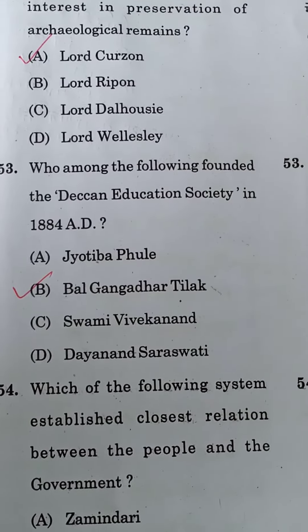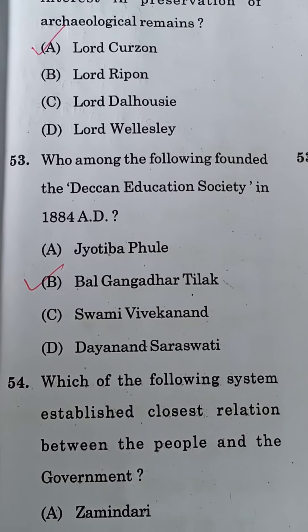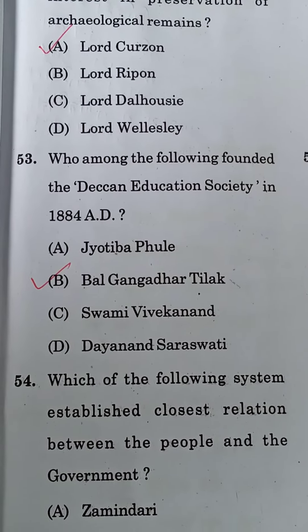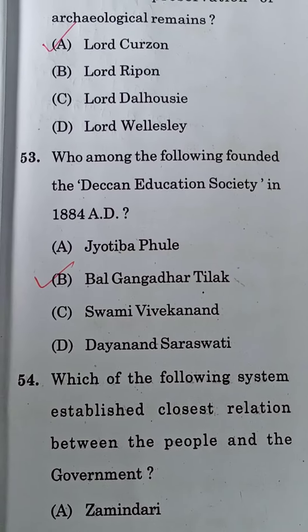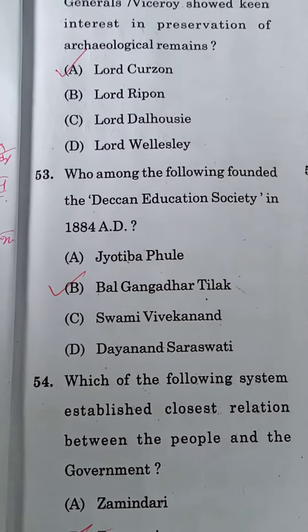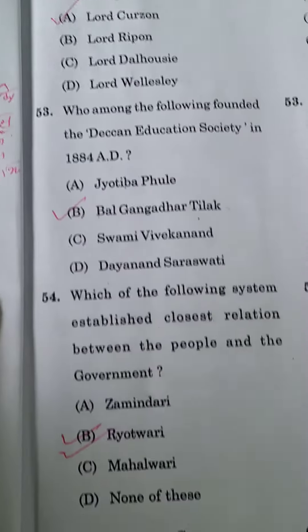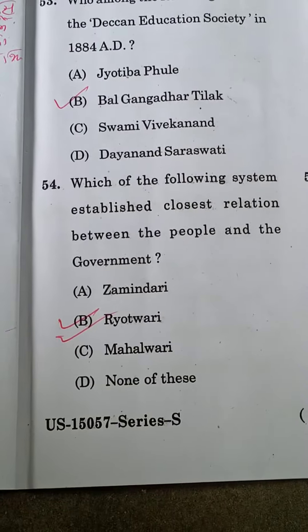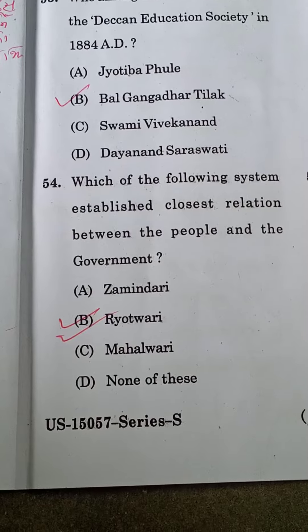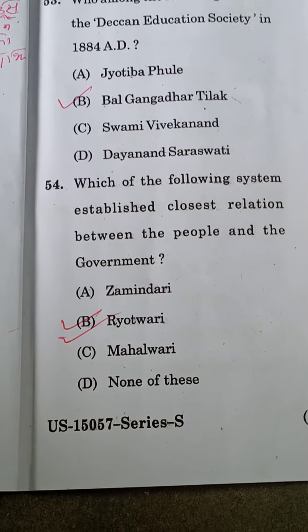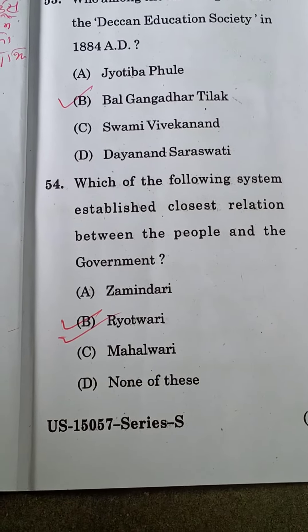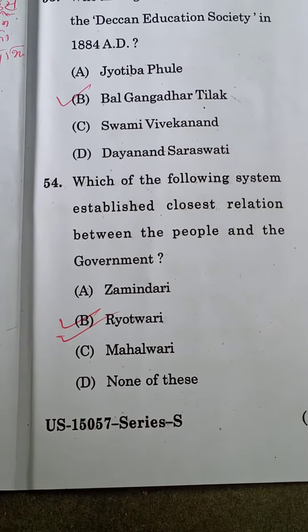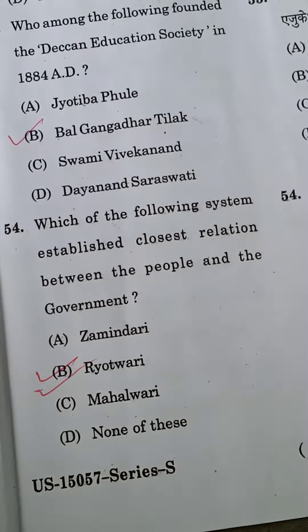Who among the following founded the Deccan Education Society in 1884 AD? Bal Gangadhar Tilak was the person who founded it. The next question is: which of the following systems established the closest relation between the people and the government? The Ryotwari system was that system.